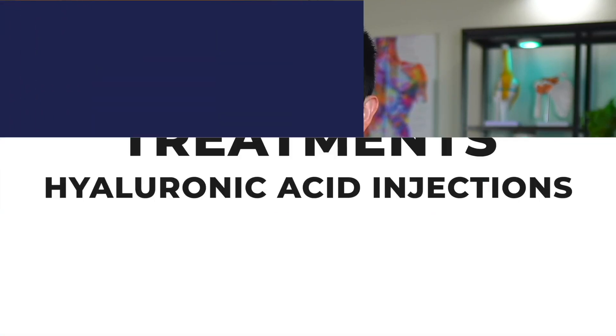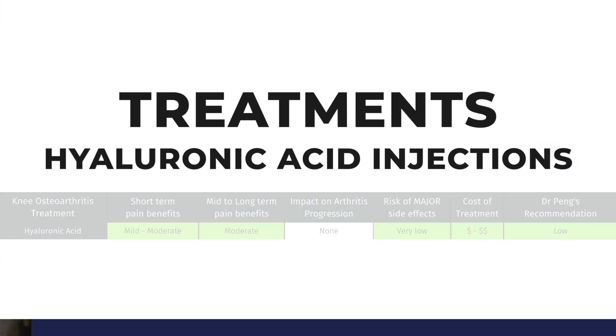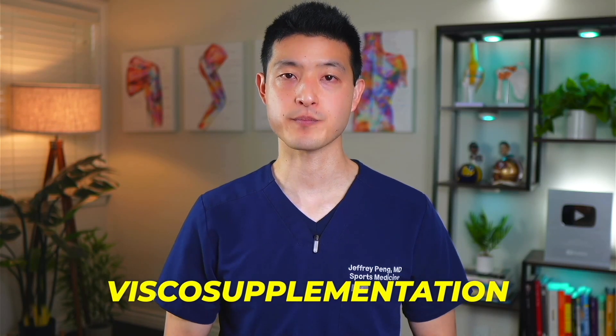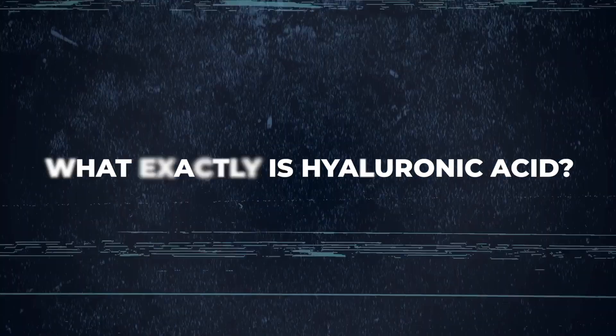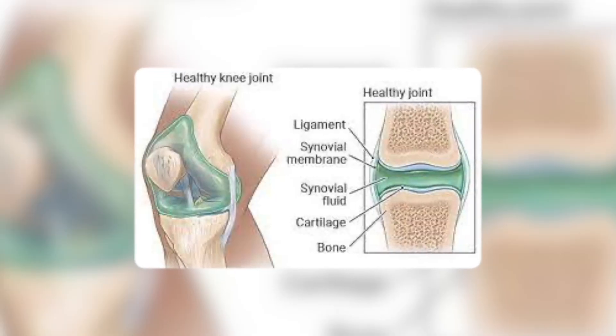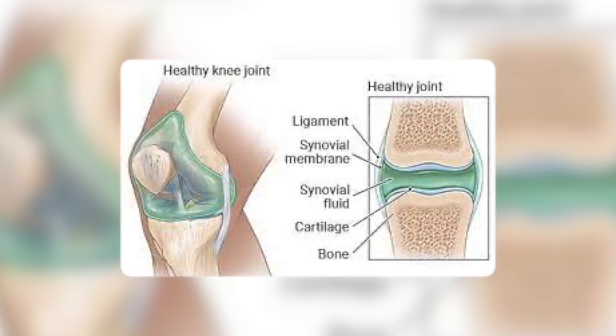Let's explore some alternative treatments starting with hyaluronic acid injections, also known as gel shots, HA injections, or visco-supplementation. Hyaluronic acid is a naturally occurring substance found in the synovial fluid of our joints, and it plays a key role in lubricating and cushioning the joints.